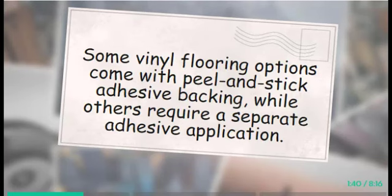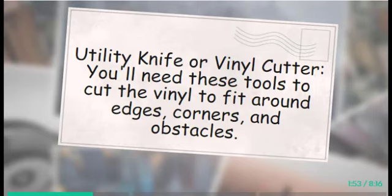Adhesive: You'll need an adhesive that is appropriate for your chosen type of vinyl flooring. Some vinyl flooring options come with peel and stick adhesive backing, while others require a separate adhesive application. Trowel or Adhesive Spreader: This tool will help you evenly apply the adhesive to the surface. Utility Knife or Vinyl Cutter: You'll need these tools to cut the vinyl to fit around edges, corners, and obstacles.